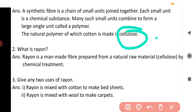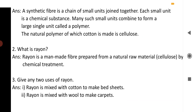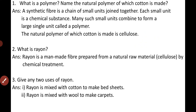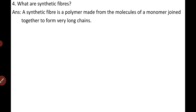Question two: What is rayon? Rayon is a man-made fiber prepared from a natural raw material — cellulose — by chemical treatment. Uses of rayon: rayon is mixed with cotton to make bed sheets, and rayon is mixed with wool to make carpets.